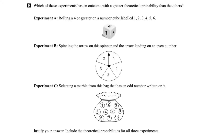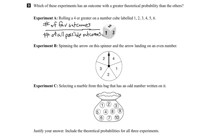Theoretical probability is expressed as a ratio. On the top is the number of ways to get what you want, or in other words, the number of favorable outcomes. On the bottom is the number of all possible outcomes. The key here is that these possible outcomes must all be equally likely.